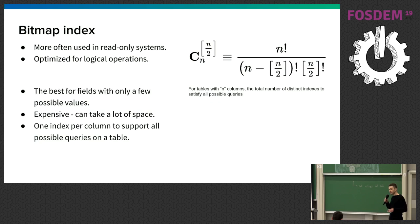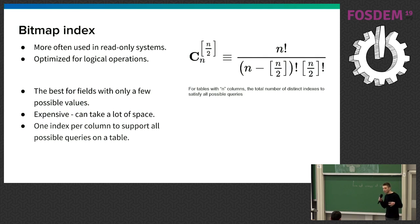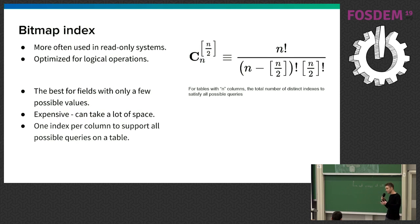Bitmaps can be expensive to rebuild, so they're a good choice for read-only systems. They work best when you have a lot of data but not many possible values. The good thing about bitmaps is that because they're optimized for logical operations, you can create one index per column to satisfy all queries. Without bitmap indexes, the number of indexes you need to satisfy all possible queries is much larger — it scales with the number of columns n.